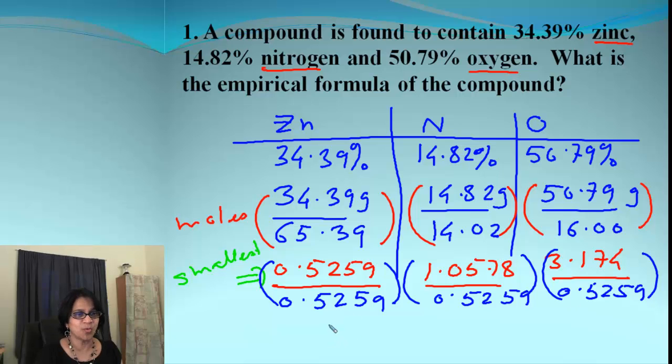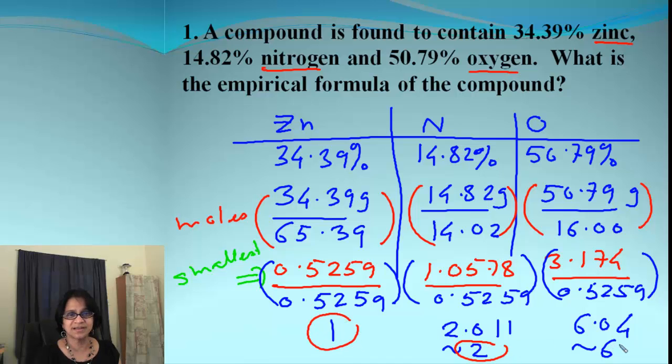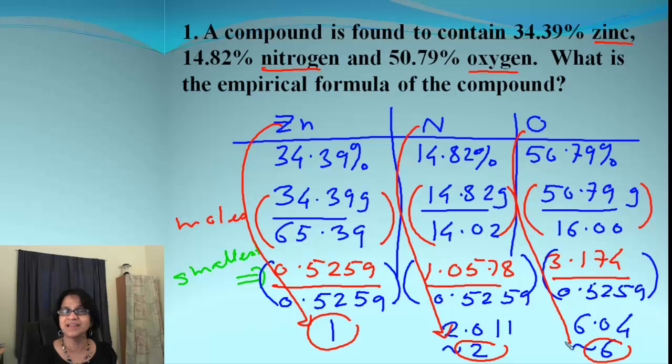So what we got? 1, 2.011 and 6.04. Well we can round up this to 2 and round up this to 6. So in a way we got 1, 2 and 6 as the ratio of every element. If it was not there then we will go further and we will say multiply till the whole number. In this case we got the whole number.